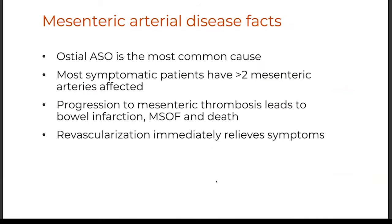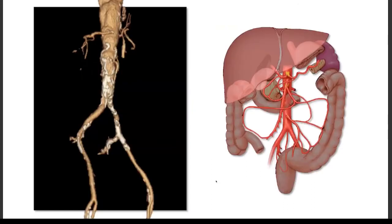Classic facts from the textbooks: it's an ostial disease; most often symptomatic patients have at least two of the three arteries affected; progression to mesenteric thrombosis leads to bowel infarction, multi-system organ failure, and death. This is a very rewarding pathology because revascularization often leads to immediate symptom relief — it's nice to see these patients who often have had symptoms for over a year.